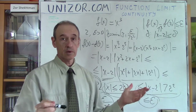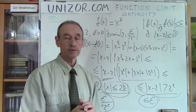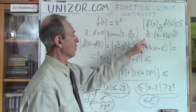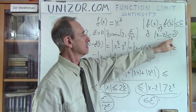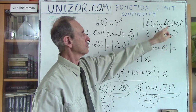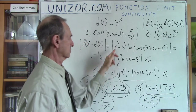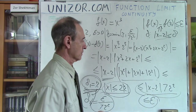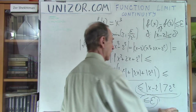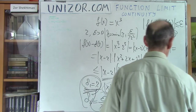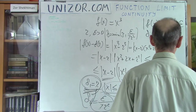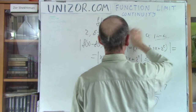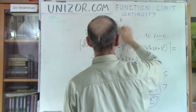That's it — I found delta, and from |x − r| < δ it follows that |f(x) − f(r)| < ε. So I have proven that f(x) = x³ is a continuous function.